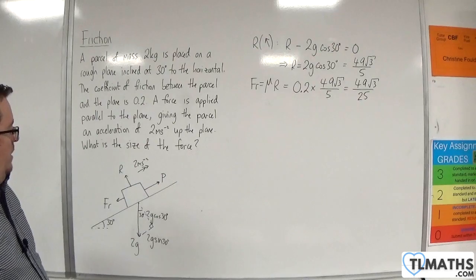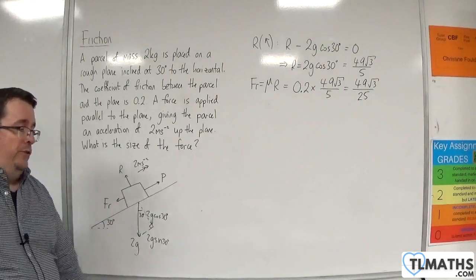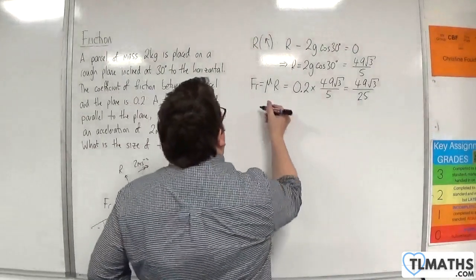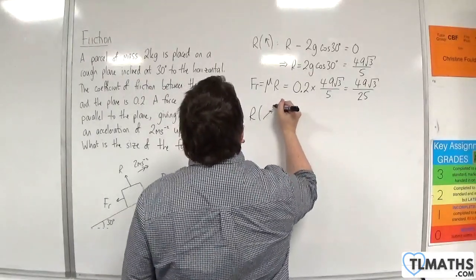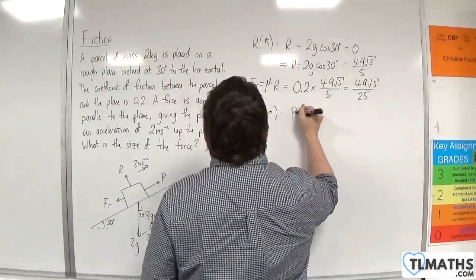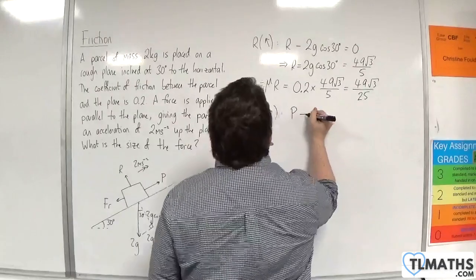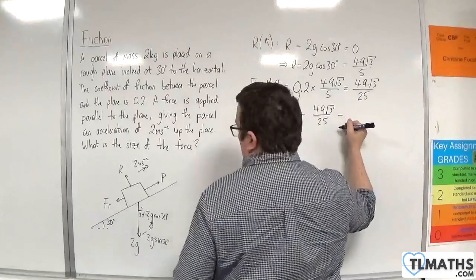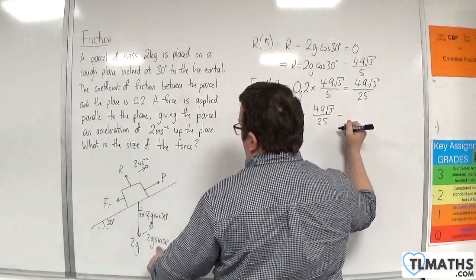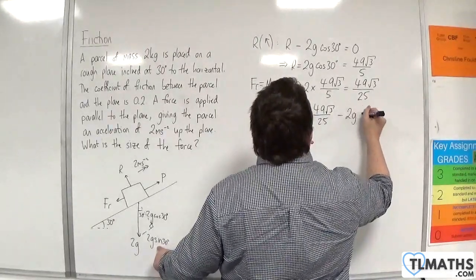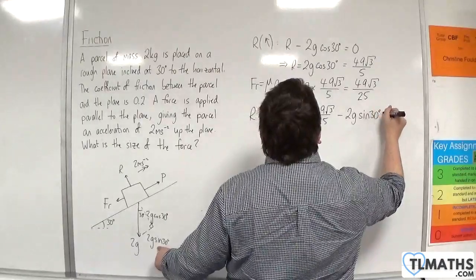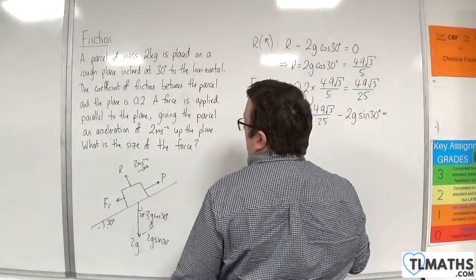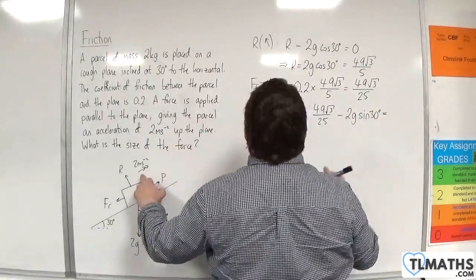Now I'll resolve parallel to the plane, taking up the plane as positive. We'll have P, then take away the friction, 49 root 3 over 25, take away 2g sin 30. And that's going to be equal to the mass, which was 2, times the acceleration, 2.